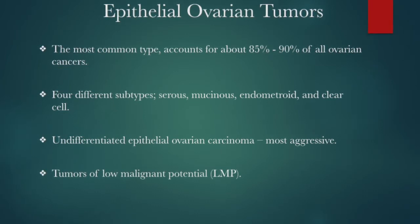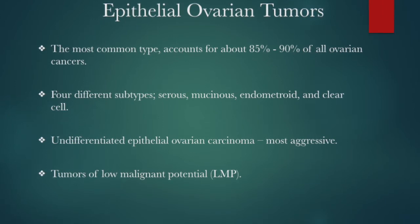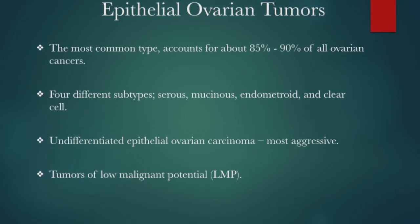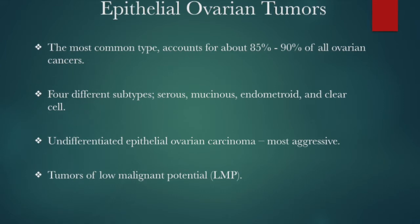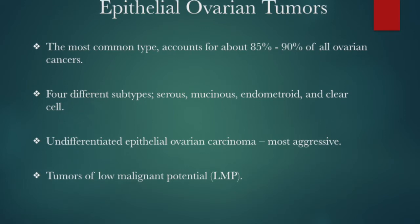Low malignant potential, or LMP tumors, are also epithelial cell tumors. Microscopically, these tumors do not clearly appear to be malignant and are also called borderline epithelial ovarian cancer. LMP tumors are slow-growing and less life-threatening.